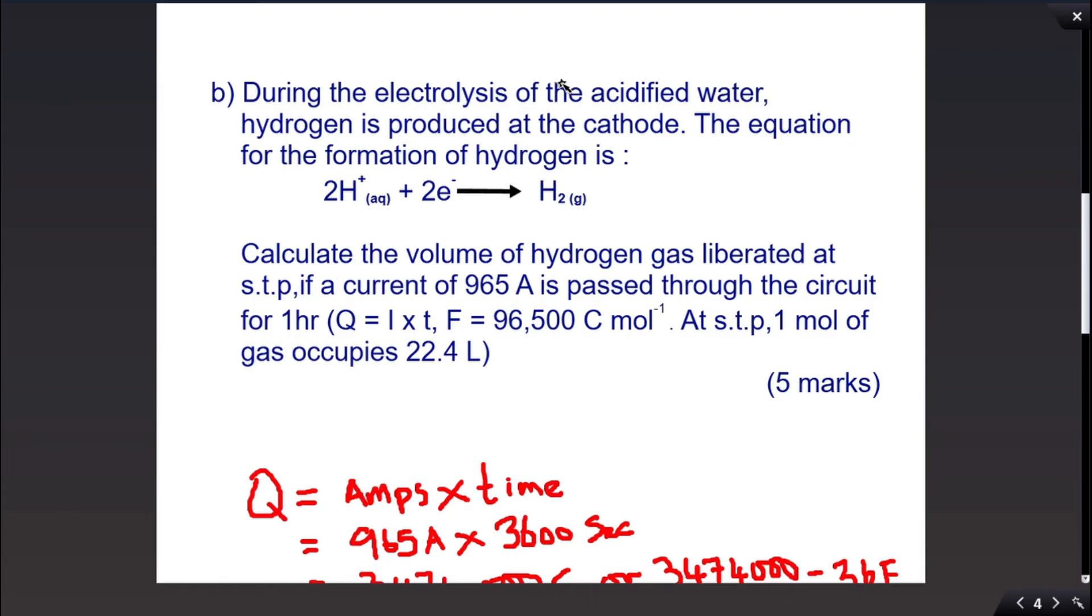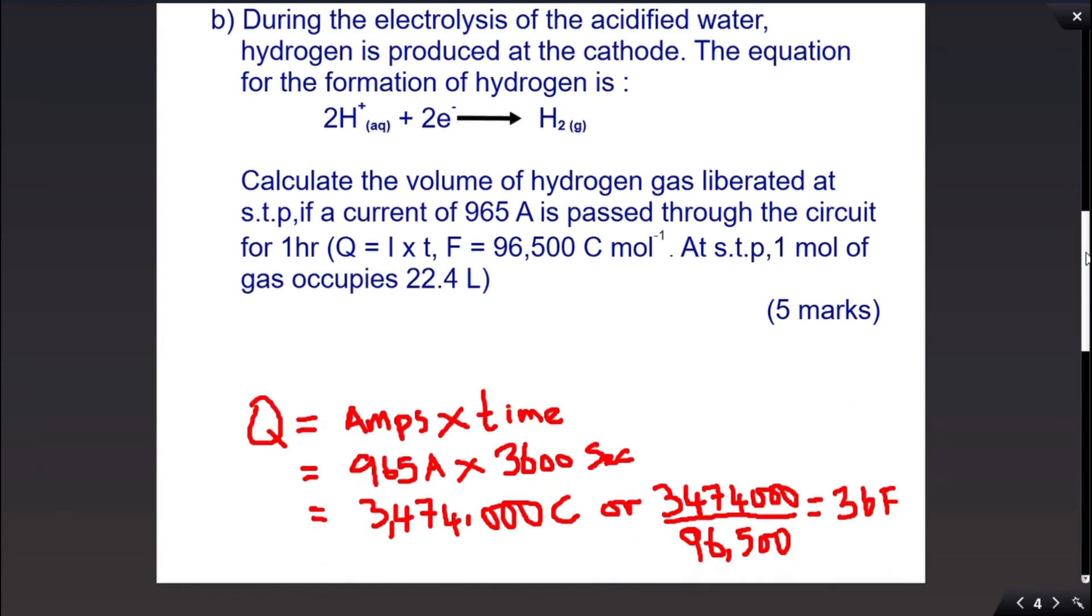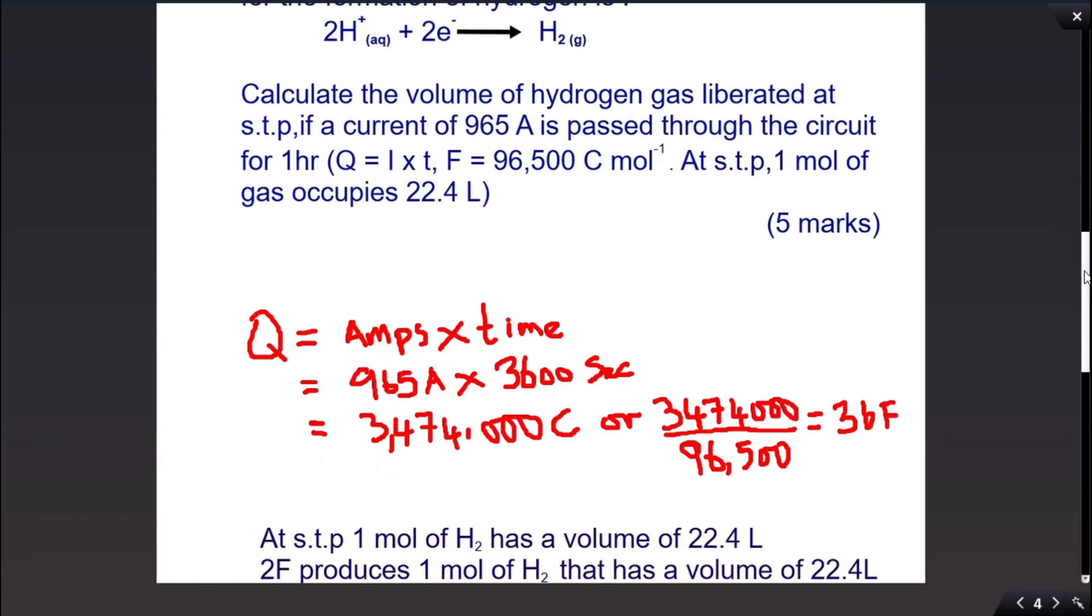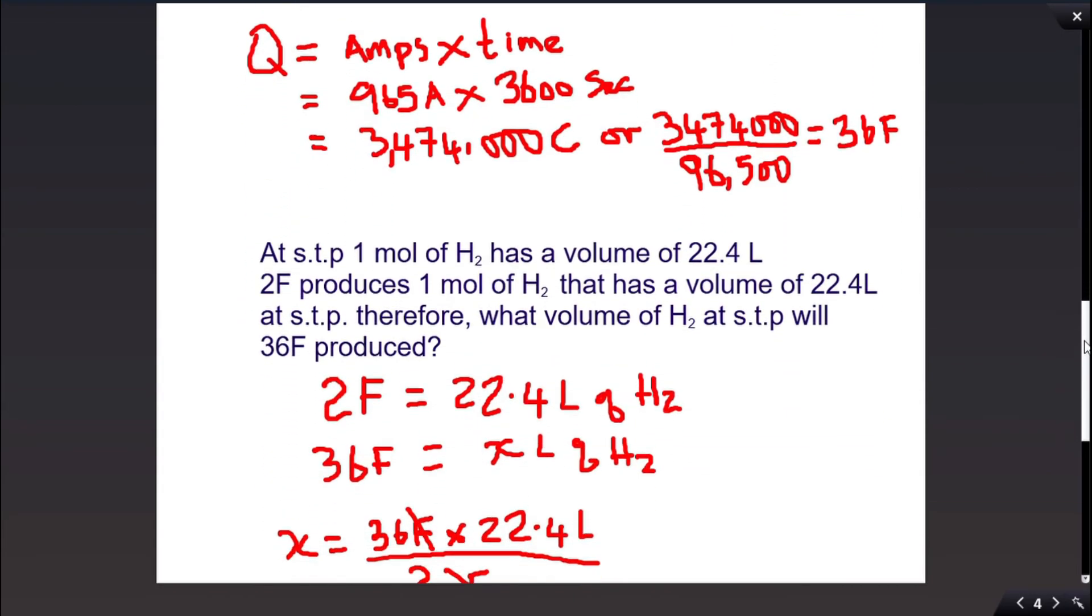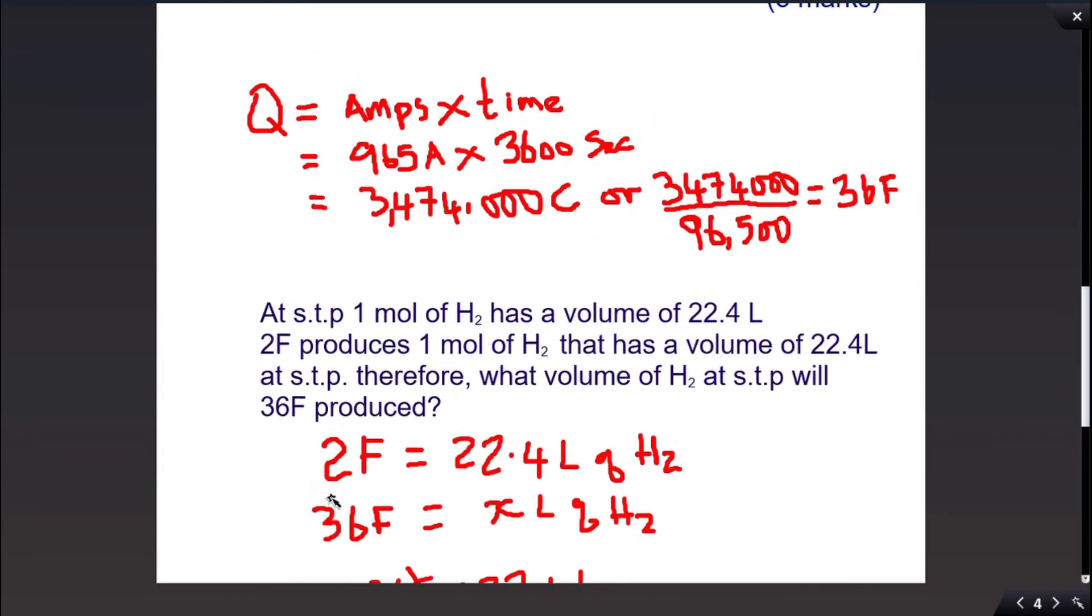Two Faradays are needed to carry out that process. Now we know that. So what volume of hydrogen at STP will 36 Faradays produce? We know that 2 Faradays equal 22.4 liters of hydrogen. Therefore, 36 Faradays will produce...